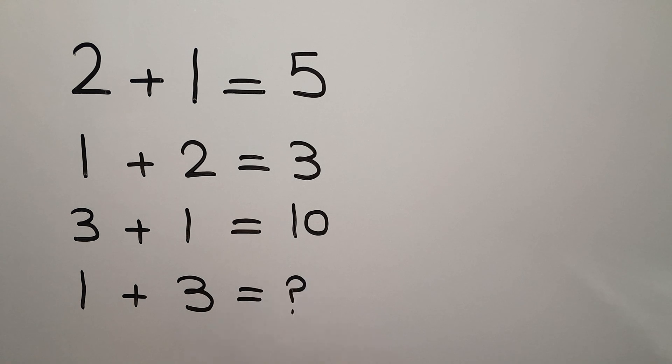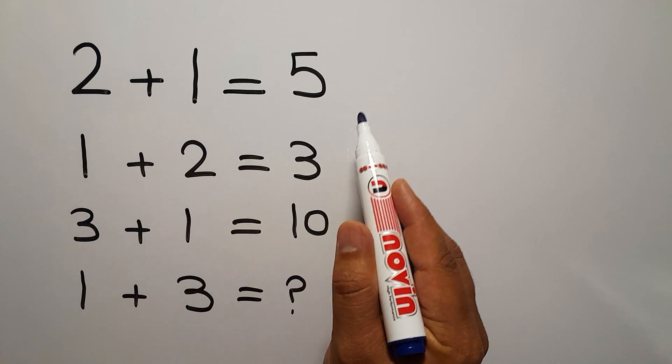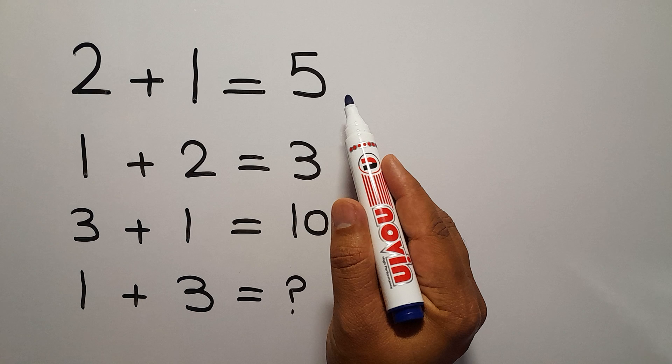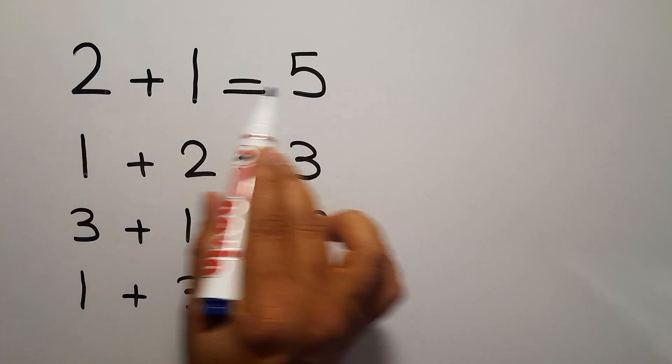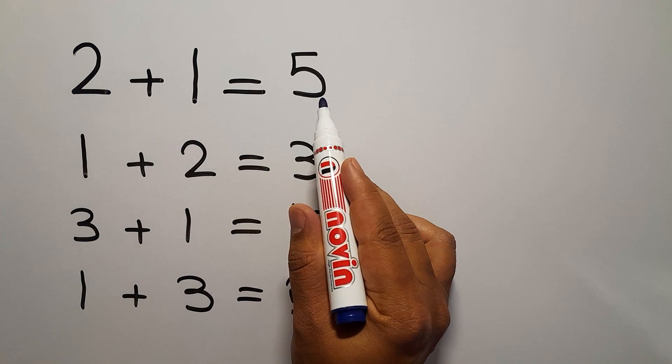Let's get started. In each line we have three numbers and we need to find the relationship between these numbers. In the first line we have 2, 1, and 5.